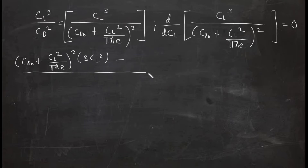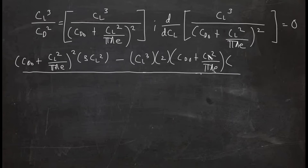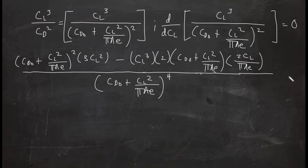The derivative of the numerator is 3CL², minus CL³ times the derivative of the denominator. That is 2·(CDo + CL²/(πAe))¹ times the derivative of (CDo + CL²/(πAe)). Since CDo is constant, its derivative is zero, and the derivative of CL²/(πAe) is 2CL/(πAe). The whole expression set equal to zero.